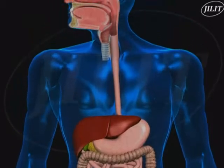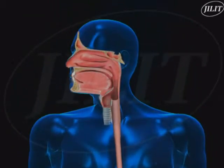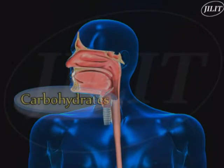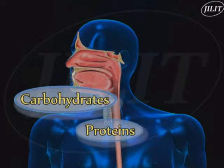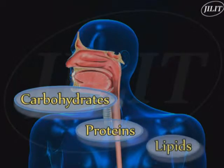The nutrients in the food we eat are largely carbohydrates, proteins, lipids, etc. These nutrients can be broken down into their smaller units through hydrolysis, which normally involves enzymatic action.